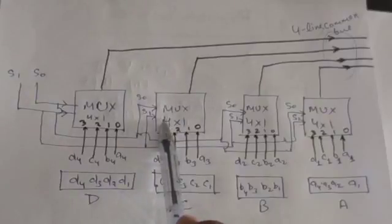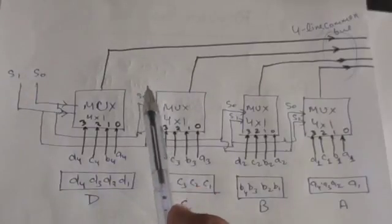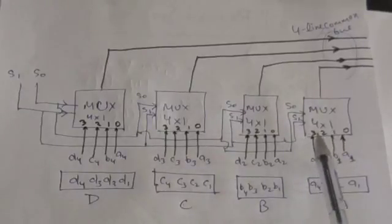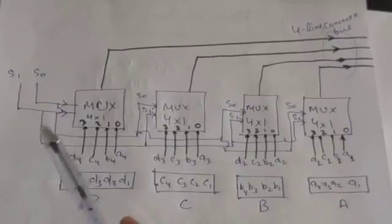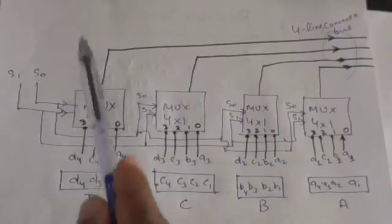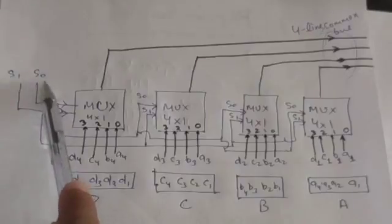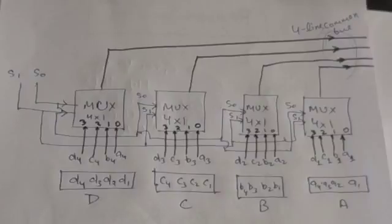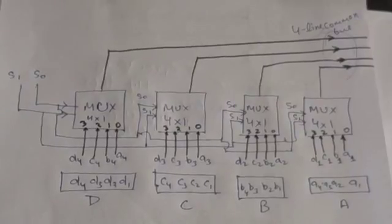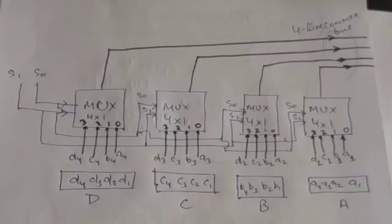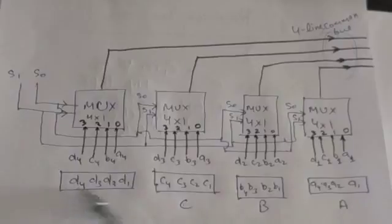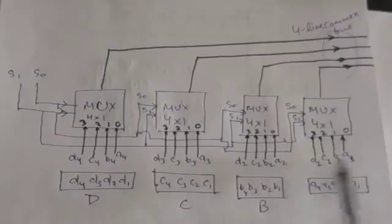Each multiplexer has data inputs 0, 1, 2, and 3. All four multiplexers share common selection lines S0 and S1. In the first multiplexer, the first bit of all registers — A1, B1, C1, and D1 — are applied as inputs in that order.